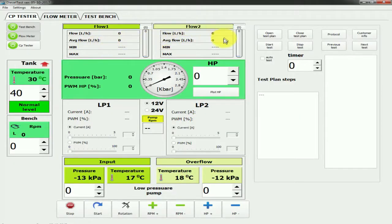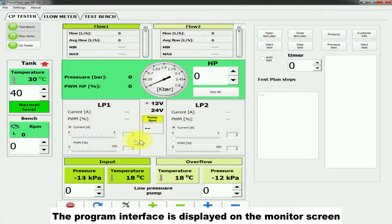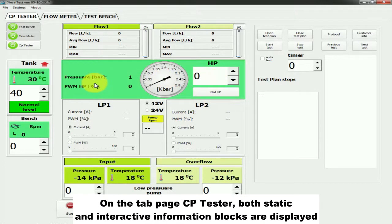Run the Diesel Test program. The program interface is displayed on the monitor screen. On the CP Tester tab page, both static and interactive information blocks are displayed.